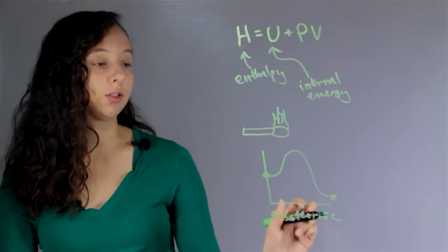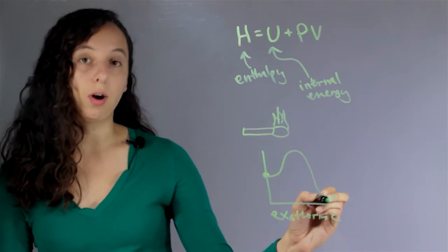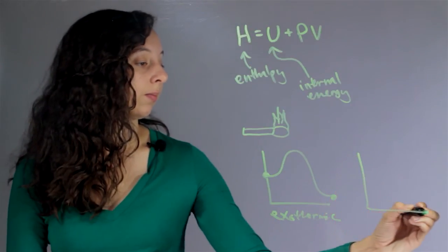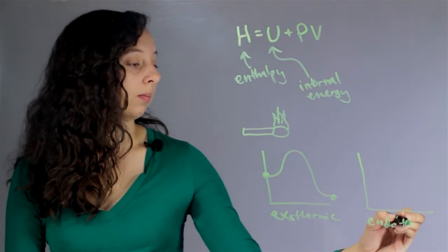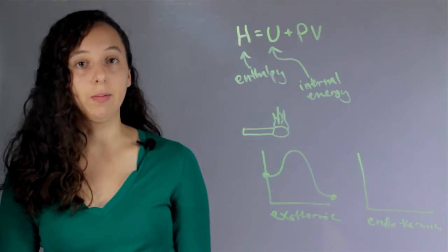Exothermic means that it starts with a certain amount of heat, and at the end that amount is lower. Now the other type of reaction is called endothermic, and as you can guess, it's pretty much just the opposite of exothermic.